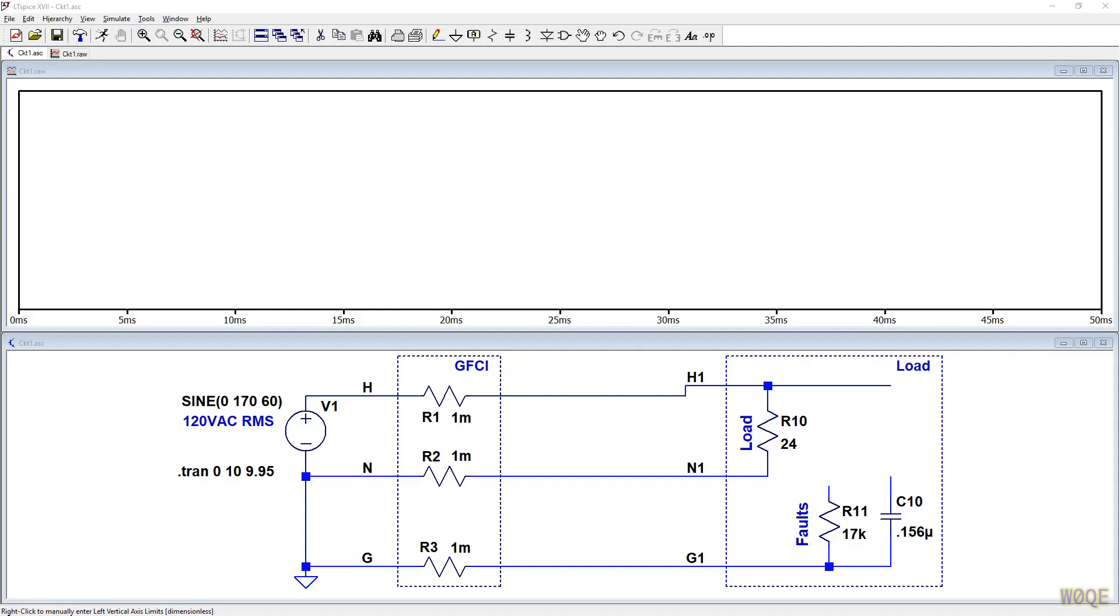In this case right now I've got a GFCI block here. Really there's nothing here. All it is is three 1 milli-ohm resistors, but I'm going to turn it into a ground fault circuit interrupter. I believe the reason for doing the grounding has something to do with ground fault circuit interrupter compatibility.